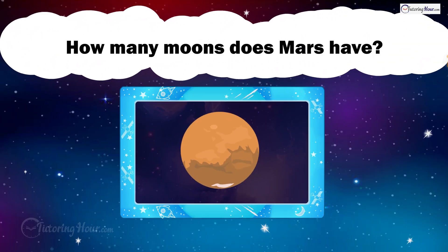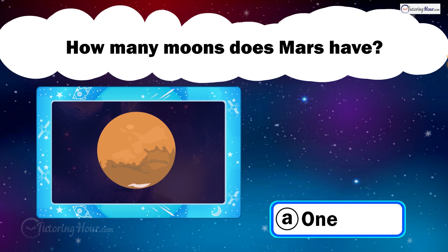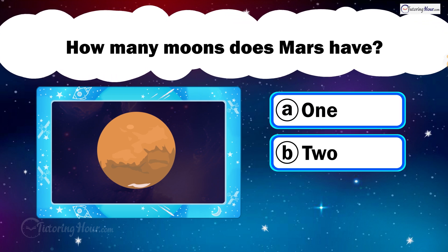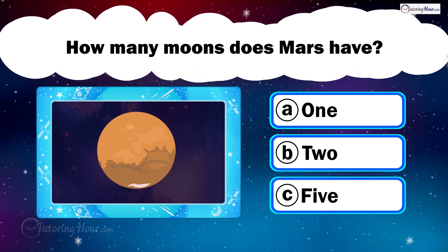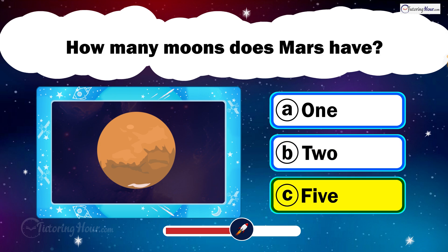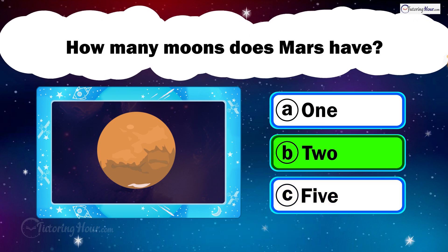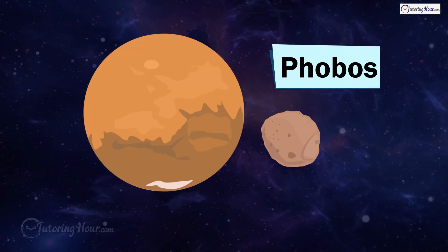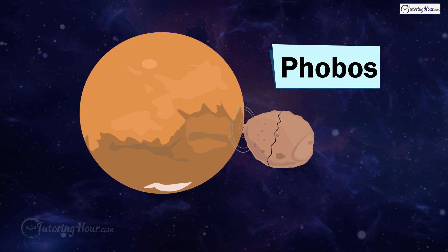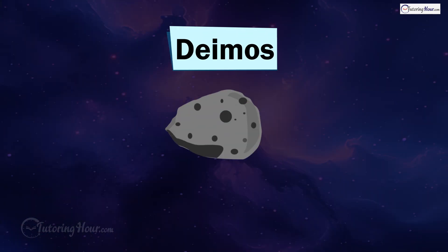How many moons does Mars have? Is it A. 1, B. 2, or C. 5? Mars has two moons, Phobos and Deimos. Phobos is the bigger of the two and is on a collision course with Mars, while Deimos is a small, lumpy, and heavily cratered object.